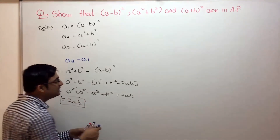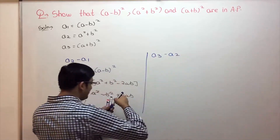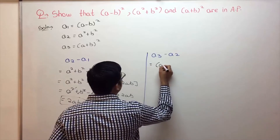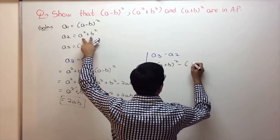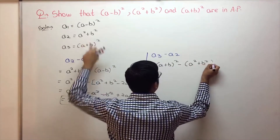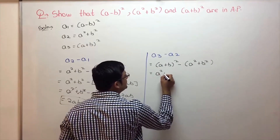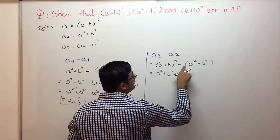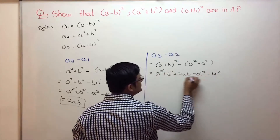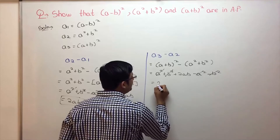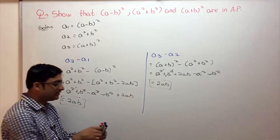Similarly, we find a3 minus a2. That is (a + b)² minus (a² + b²). Expanding (a + b)² gives a² + b² + 2ab, then minus (a² + b²). So a² - a² cancels, b² - b² cancels, and what remains is 2ab. So a3 minus a2 also equals 2ab.